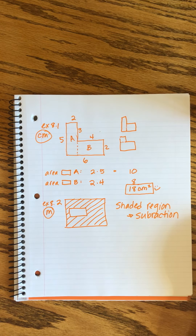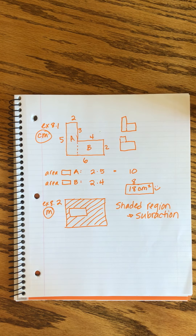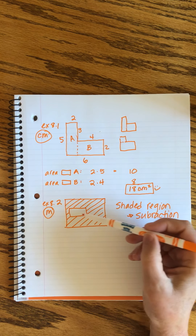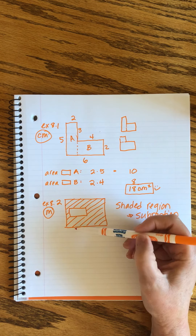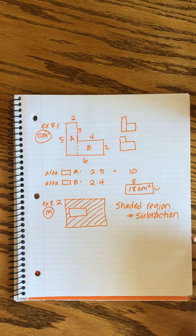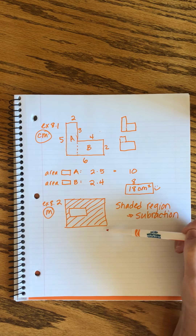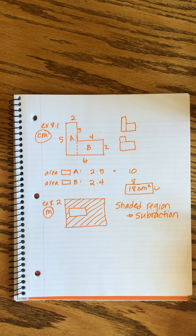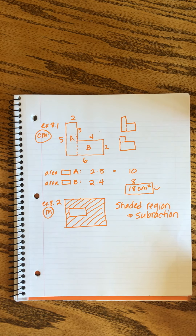Think of it like a piece of toast: the whole rectangle is the toast, and there's a hole bitten out of the middle. We're trying to find how much toast we have left. The way we do that is first measure how big the whole bread was, then subtract how big the bite was.